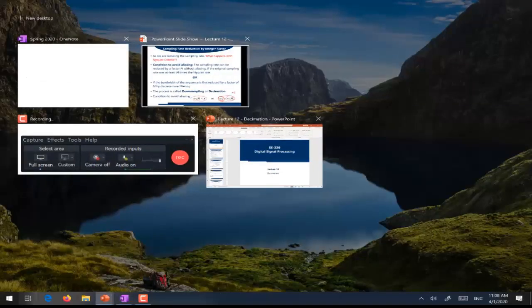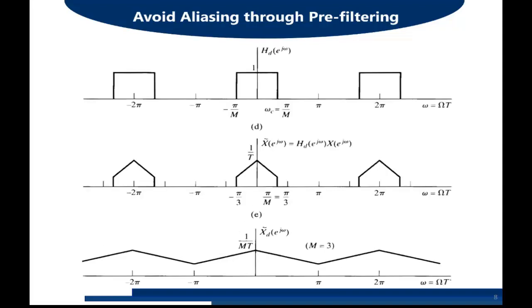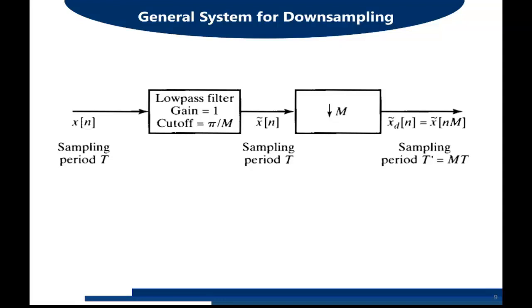To conclude, this is the general system for decimation. If we have the discrete time signal x(n) as input sampled at sampling period T, it will be passed through a low pass filter with gain equal to 1 and cutoff frequency of π/M. This filter is mandatory for decimation. After filtering we get x_δ(n) with some content discarded. The input and output of the low pass filter are at the same sampling rate — the sampling rate change occurs at the downsampling stage, where the filtered signal is downsampled by M to result in a signal with sampling period T′ = M·T. That is the concept of decimation — thank you very much.